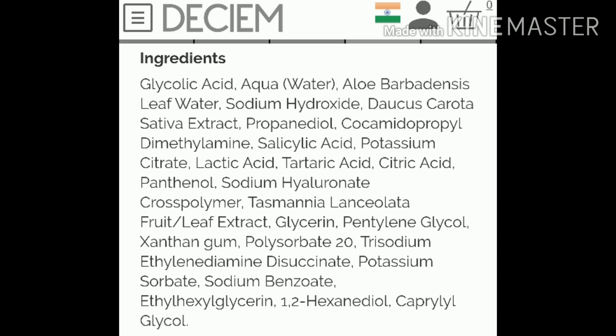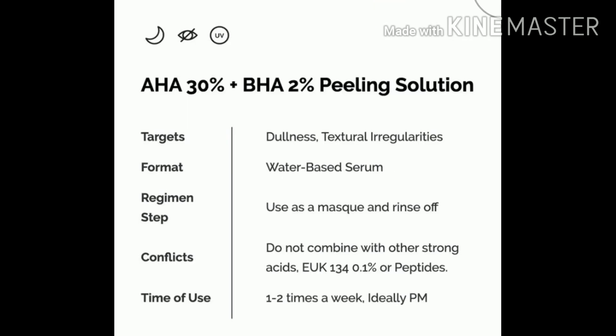The AHA ingredient is glycolic acid, which comes from sugar. Citric acid comes from lemon. Lactic acid comes from milk. Malic acid comes from apple. Tartaric acid comes from grapes. These are all plant or fruit-based, full plant-based ingredients. BHA is a wax-type ingredient — salicylic acid. The AHA and BHA combination suits all skin types.